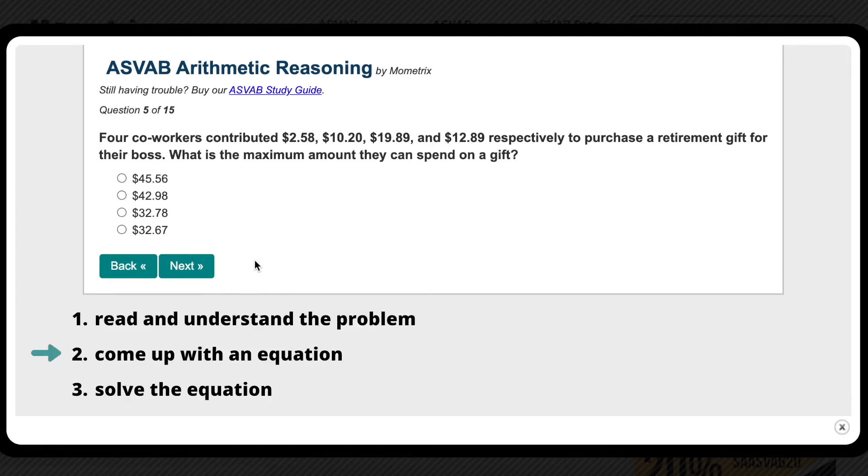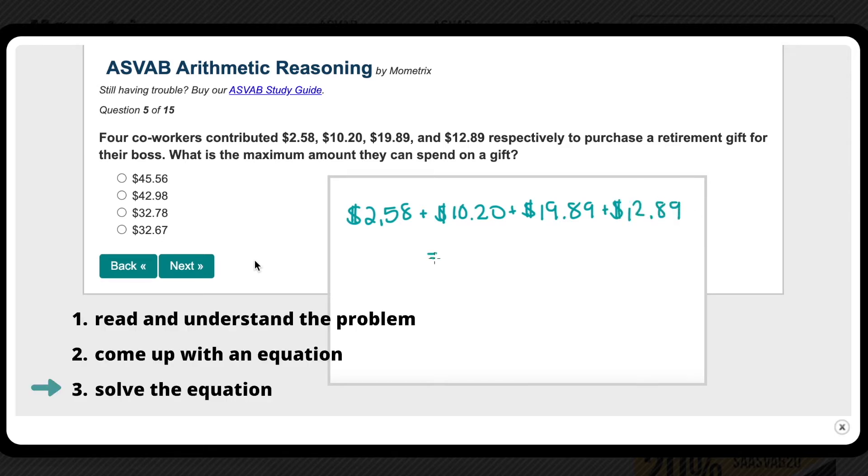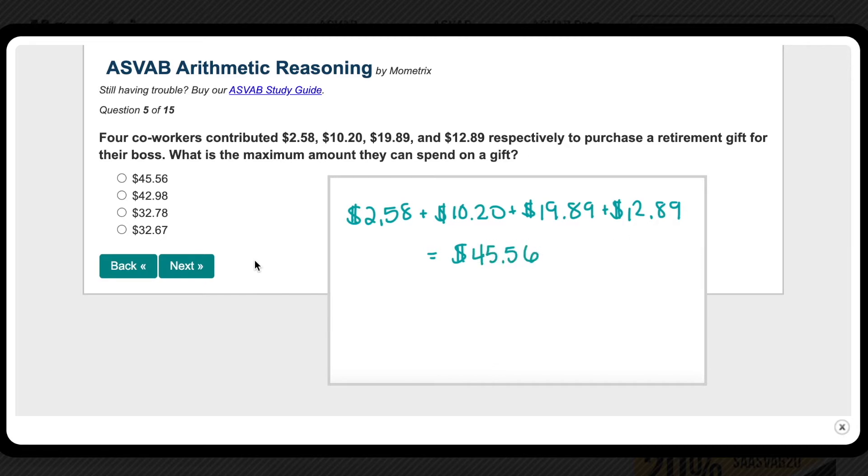Now that we read and understand our problem, our second step is to come up with an equation. In order to find the maximum amount of money they can spend, we need to add up all of the money that they pooled, and they can't spend more than that, so that's going to be your maximum. We'll get $2.58 plus $10.20 plus $19.89 plus $12.89 for our equation. And in our final step, let's solve. So using my calculator, I got a total of $45.56, and that is our answer.